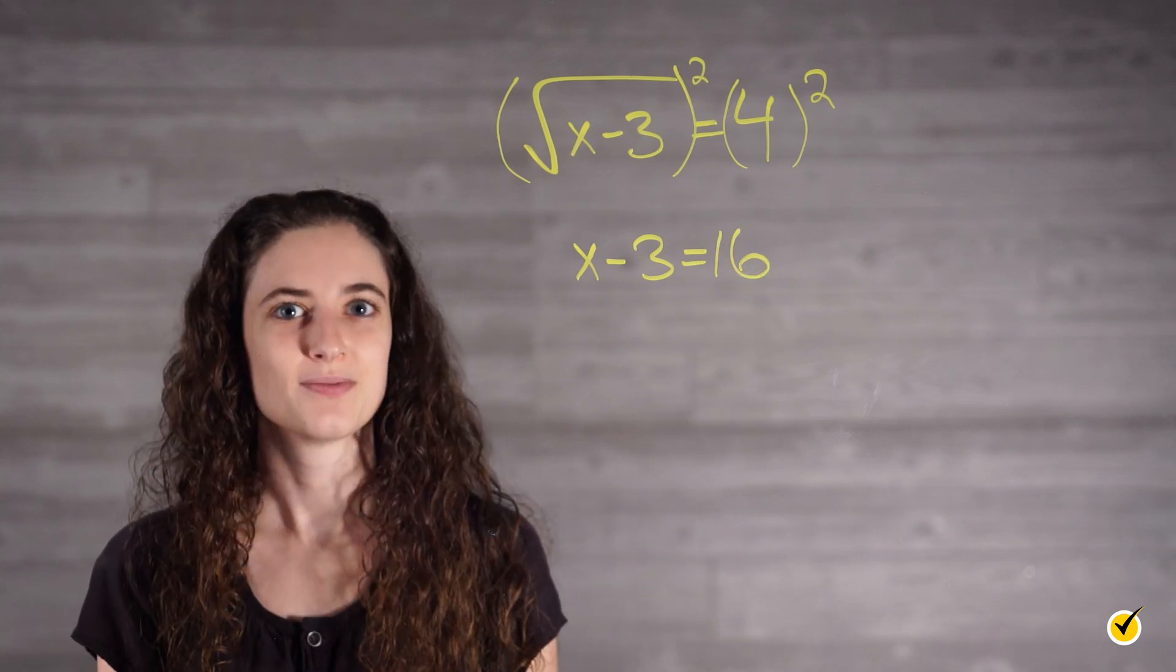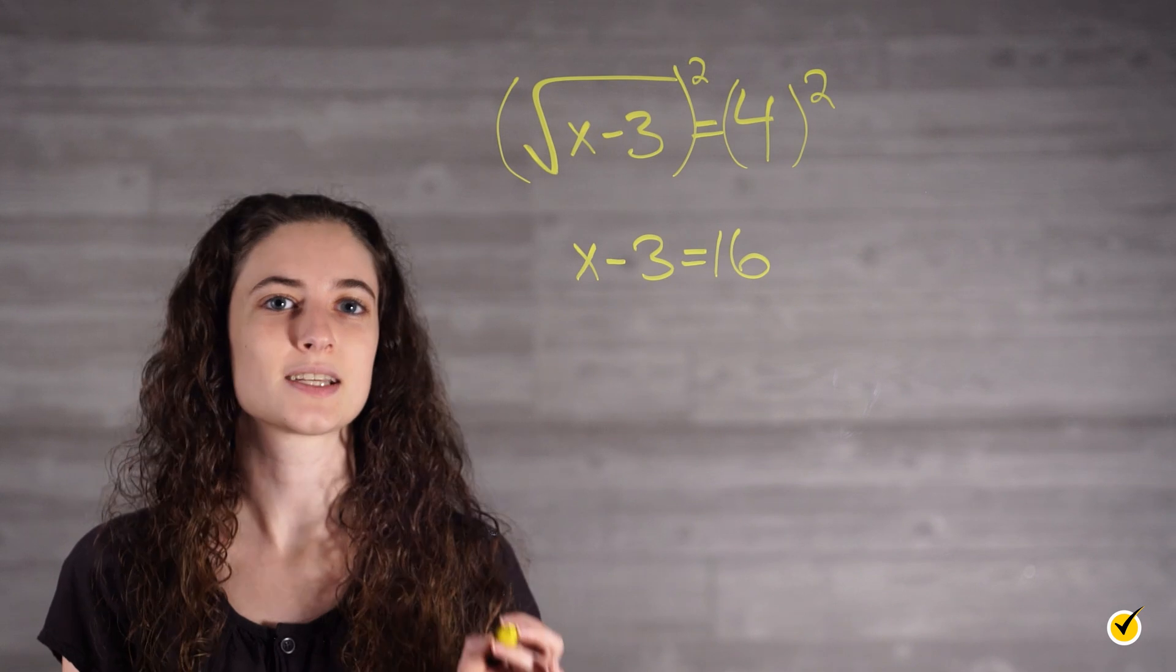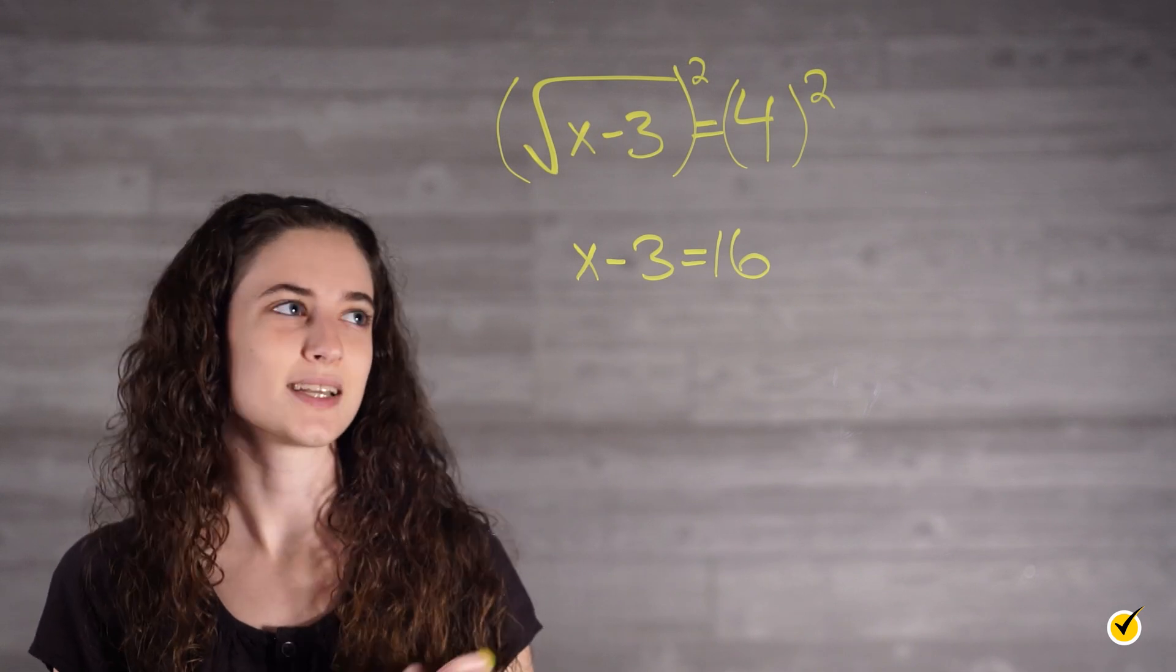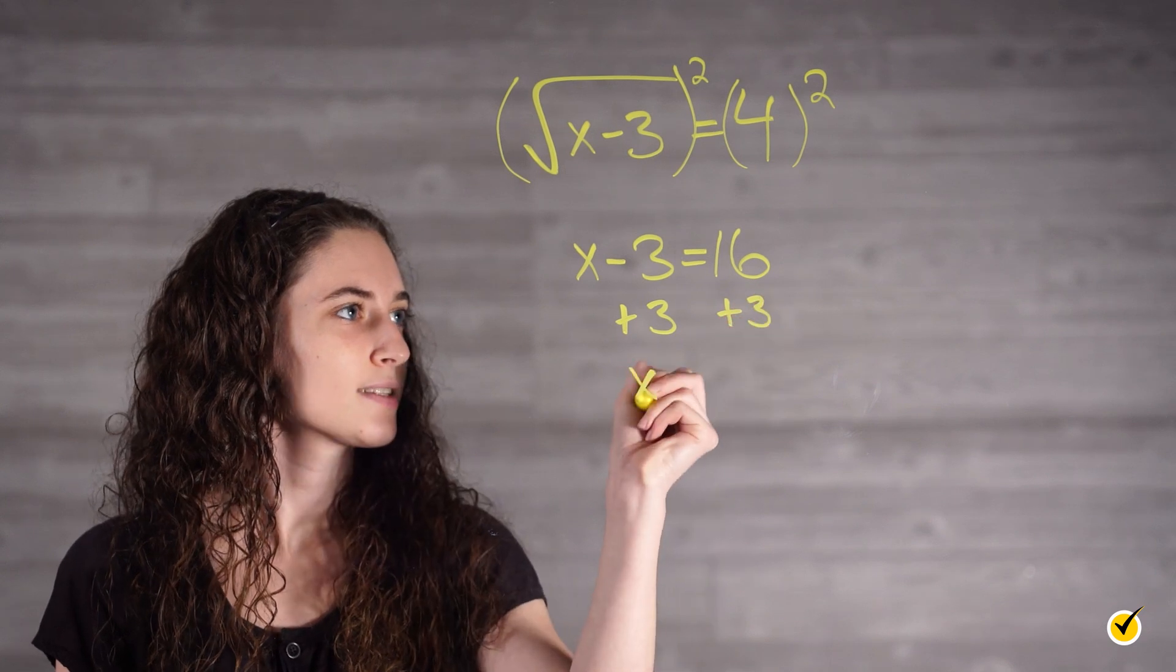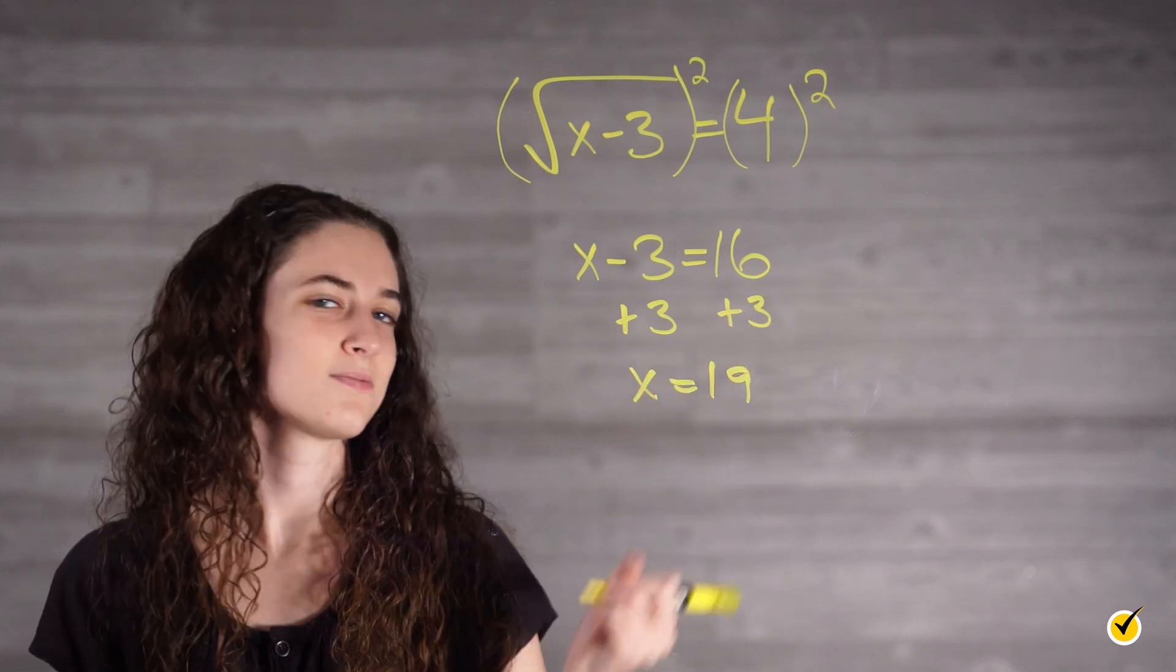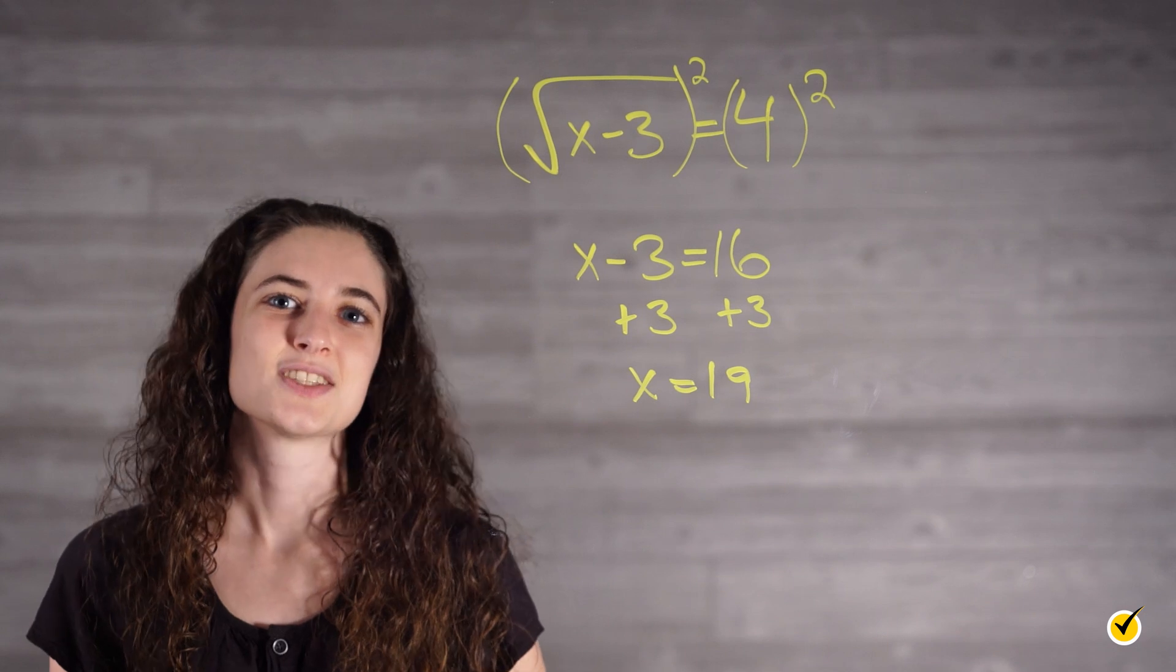Now it looks like a regular equation, and we know that all we need to do to get x by itself is add 3 to both sides. x equals 19. This gives us our final answer. That wasn't too bad.